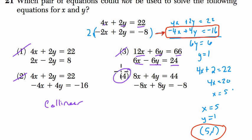So the only one left is choice 4. Let's see what's wrong with this, or what they've changed. We have 8x and 4y equals 44. So that checks out. They doubled everything.